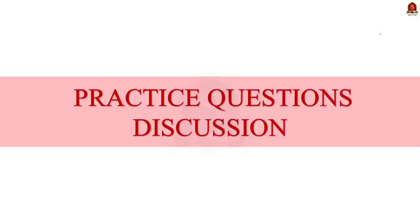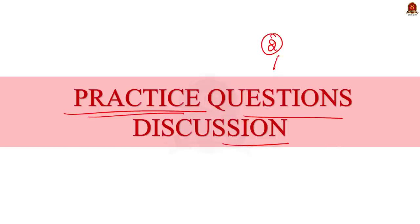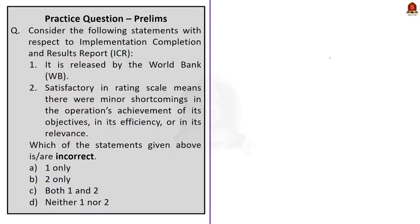Now let's move on to the preliminary practice question discussion. Today there are two questions — one discussed by me and one a quiz question for you. The first question is about the ICR report discussed today. When you get a two-statement type of question, go through both statements before arriving at the answer. Statement one says the ICR is released by the World Bank — this is correct. Statement two says 'satisfactory' in the rating scale means there were minor shortcomings — this is also correct, as satisfactory means minor shortcomings in the operation's achievement of its objectives, efficiency or relevance.